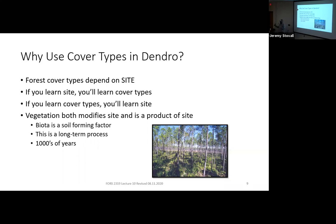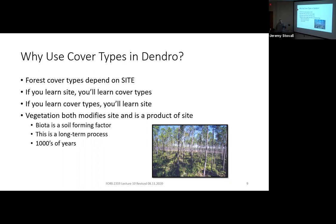In some cases a tree species can come in and set a site up for other vegetation later. One of you will give a presentation on red alder out west. Red alder fixes nitrogen — so it comes in, you may have a red alder cover type for a while. But through nitrogen fixation it improves the soil, allowing other mid and late successional species to come in after. The vegetation is found on sites because of site qualities, but it can also, to some extent, change them — though it won't change topography or elevation.